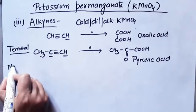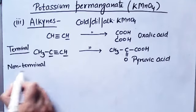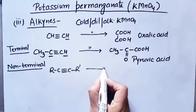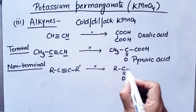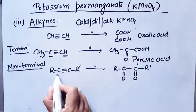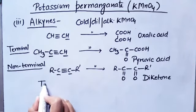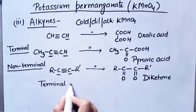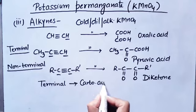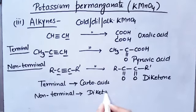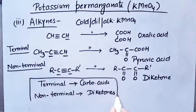For a non-terminal alkyne example, suppose R-C≡C-R: treated with cold dilute alkaline KMnO₄, both carbons change to C=O, giving a diketone. In general, remember: if terminal hydrogen is present (terminal alkyne), carboxylic acids are formed. If it is a non-terminal alkyne (no hydrogen at ends), diketones are formed.